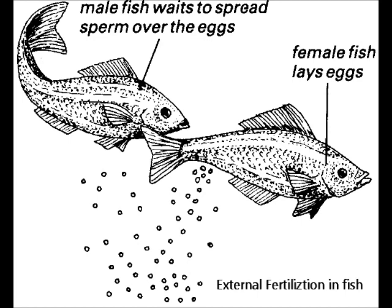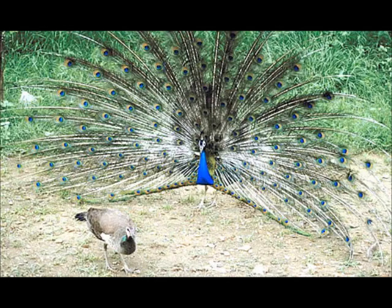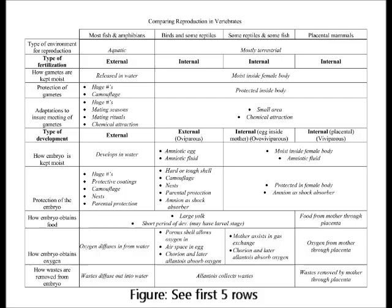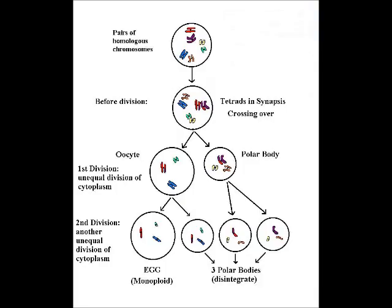Fertilization can occur externally or internally with regard to the mother's body. In either case, fertilization requires coordinated timing, which may be mediated by environmental cues, pheromones, or courtship behavior. Internal fertilization is typically associated both with relatively fewer offspring and with greater protection of offspring by the parents.